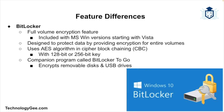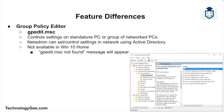BitLocker is a full volume encryption feature included with Microsoft Windows, designed to protect data by providing encryption for entire volumes. By default it uses the AES encryption algorithm and cipher block chaining with a 128-bit or 256-bit key. A companion program called BitLocker To Go encrypts removable disks and USB drives.